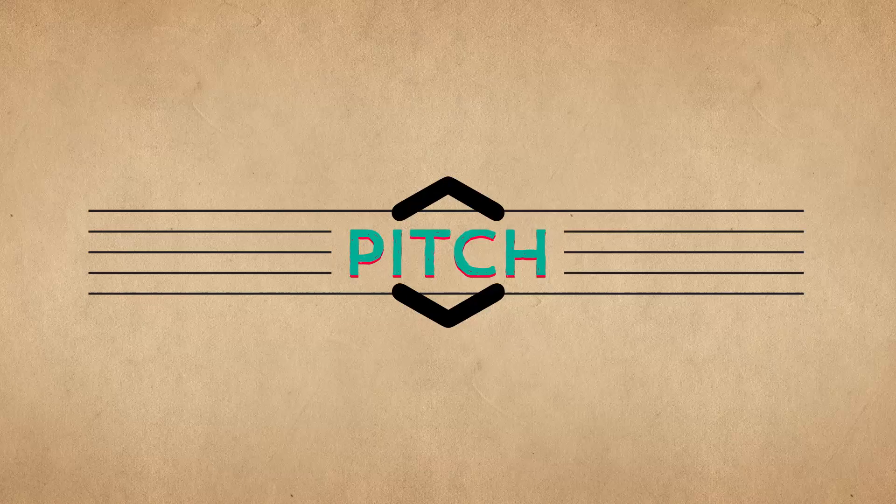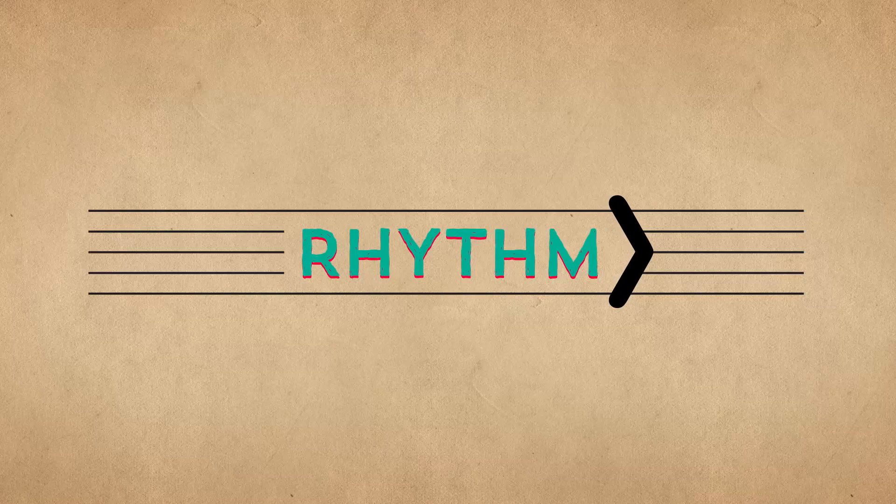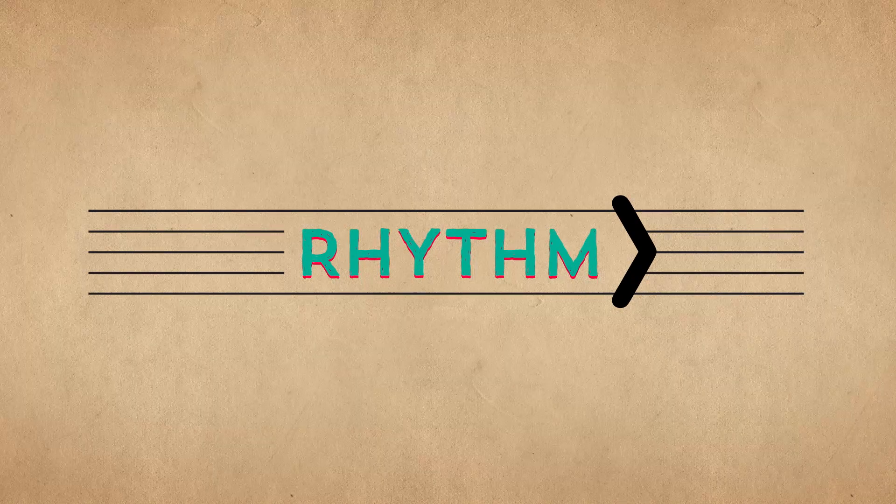The up and down axis tells the performer the pitch of the note, or what note to play, and the left to right axis tells the performer the rhythm of the note, or when to play it.